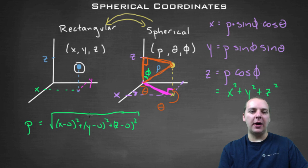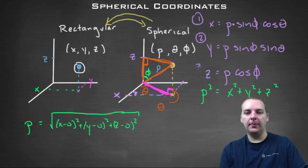If you wanted to get rid of the ugly radical, you could just square both sides and say that equals rho squared. It just looks a little prettier. Alright, let me number these for you. Number one, number two, number three, this one's number four.